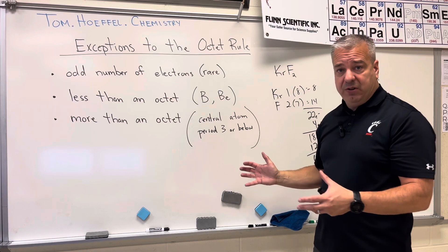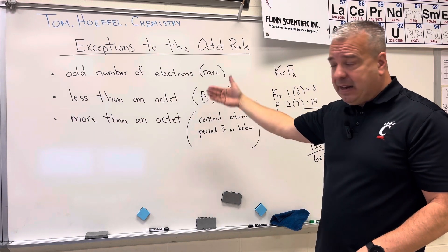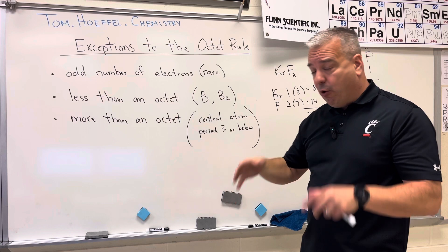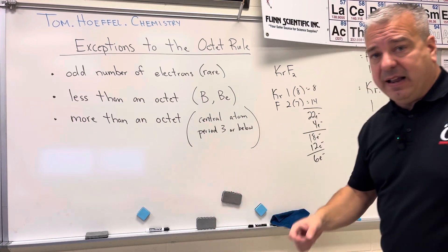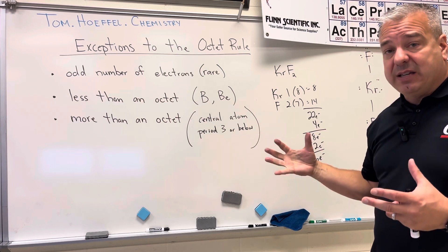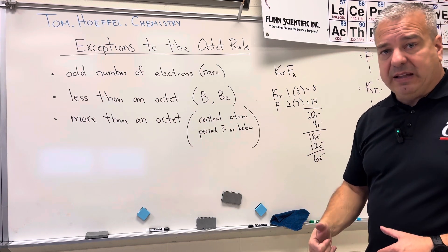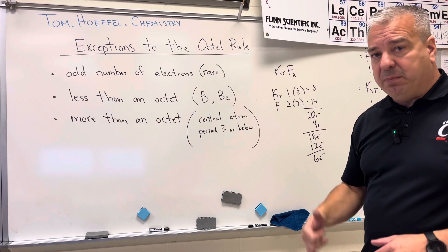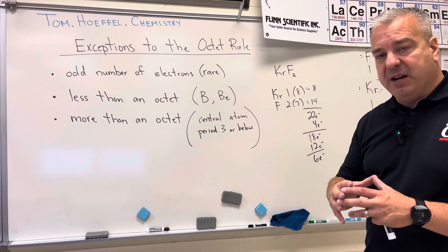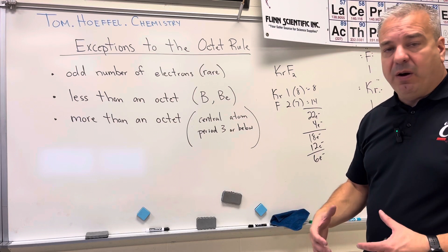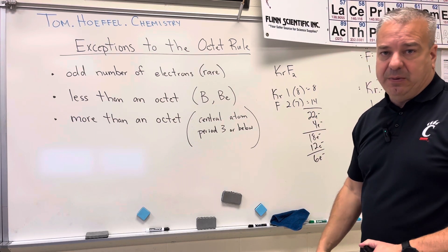I hope this helped you understand when you can have less than an octet and more than an octet, and hopefully this helps your understanding of covalent bonding. If this video helped you understand exceptions to the octet rule, please like and subscribe and share it — this helps the YouTube algorithm get this information out to other students who might want a quick review on exceptions to the octet rule.